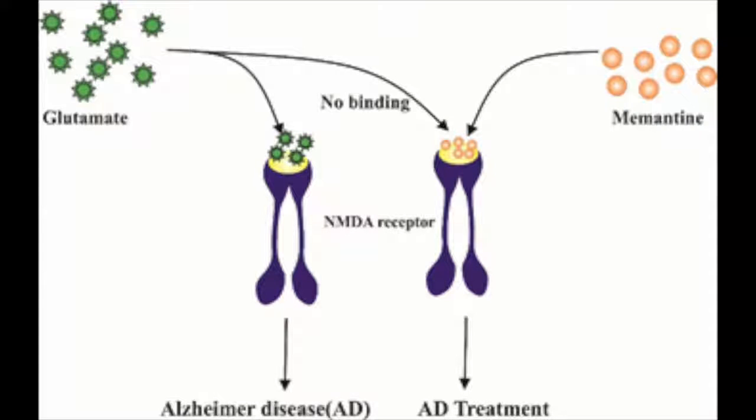The Alzheimer's drug memantine is an NMDA N-methyldeaspartate receptor antagonist, which works by regulating the activity of glutamate, an important neurotransmitter in the brain involved in learning and memory.